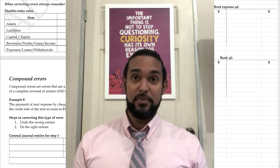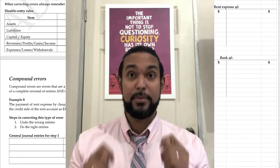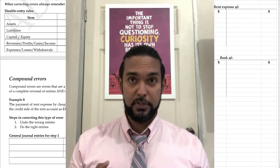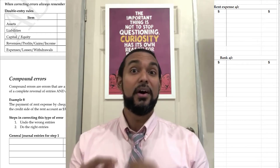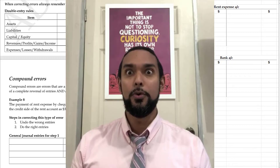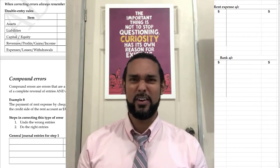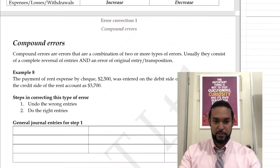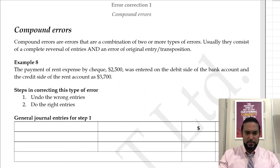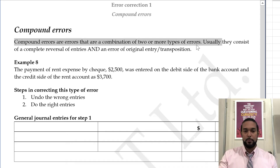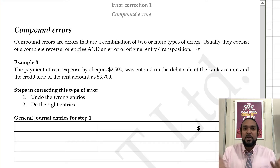It's basically a combination of any of the above errors. My examples and questions for you are going to focus on errors of reversal combined with errors of original entry. There are other types of combinations, but I'm going to leave those for you to experience on your own. So compound errors are errors that are a combination of two or more types of the previous types of errors.